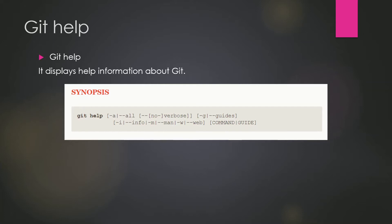In the synopsis, you can see that you have to type the command in the command prompt or the shell. You type git help with -a or --all and it will display all available commands on the standard output. If --guides or -g is given, a list of Git concept guides is also printed. If a command or guide is given, the manual page for that command or guide is brought up.